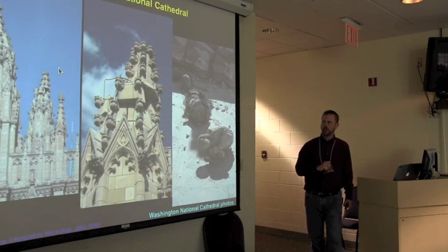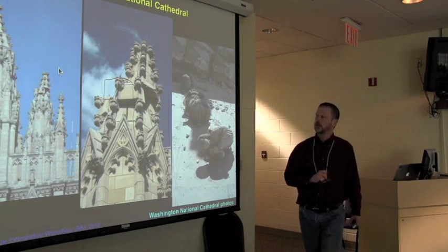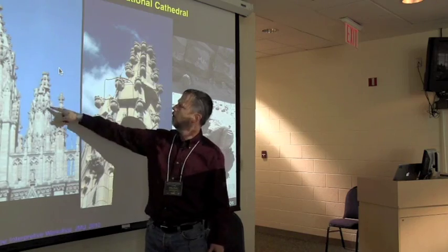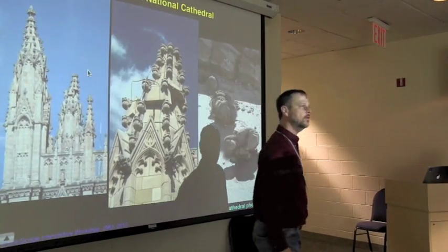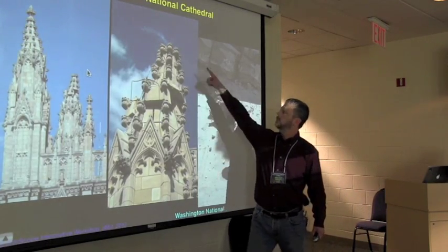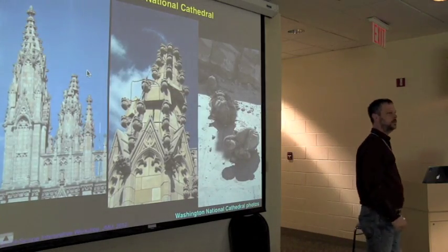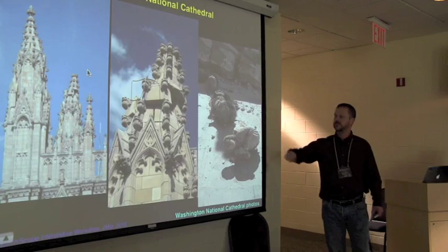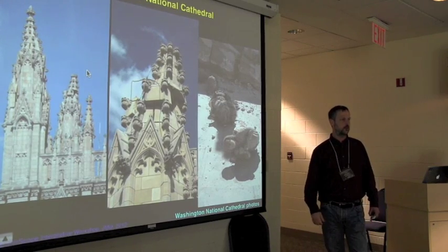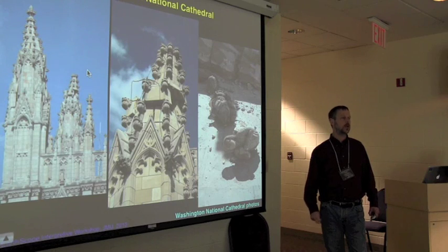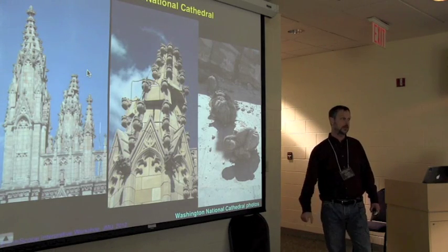The National Cathedral probably took the worst damage. Pictures of the spires after the earthquake show they aren't quite as vertical as before; one is missing its top entirely, with substantial motion visible and objects that have fallen off. This is a 20th-century building — there's no excuse for this. It was simply not designed to withstand even modest earthquake shaking, and it took pretty serious damage.